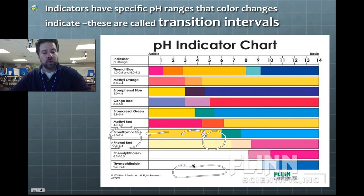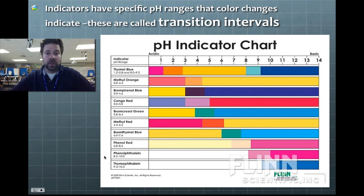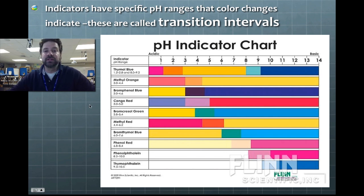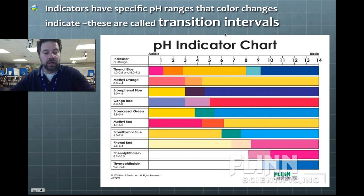There are a number of different indicators out there, each with its own unique specialty called a transition interval. Each indicator will be optimum given a certain range of pH values.